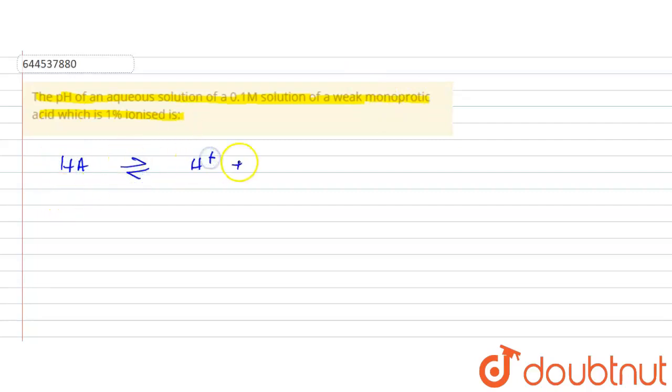Which on dissociation is going to give you H+ plus A-. Now what is said, the initial concentration is 0.1 molar. So let's write down like this, the initial concentration given is 0.1 molar. So let's say C is the initial concentration, 0 and 0.